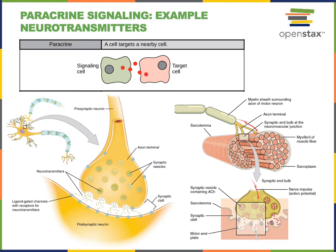Paracrine signaling is a type of intercellular signaling where the chemical message, the paracrine signal, secreted by the signaling cell travels a short distance through diffusion to bind to receptors on the target cell.